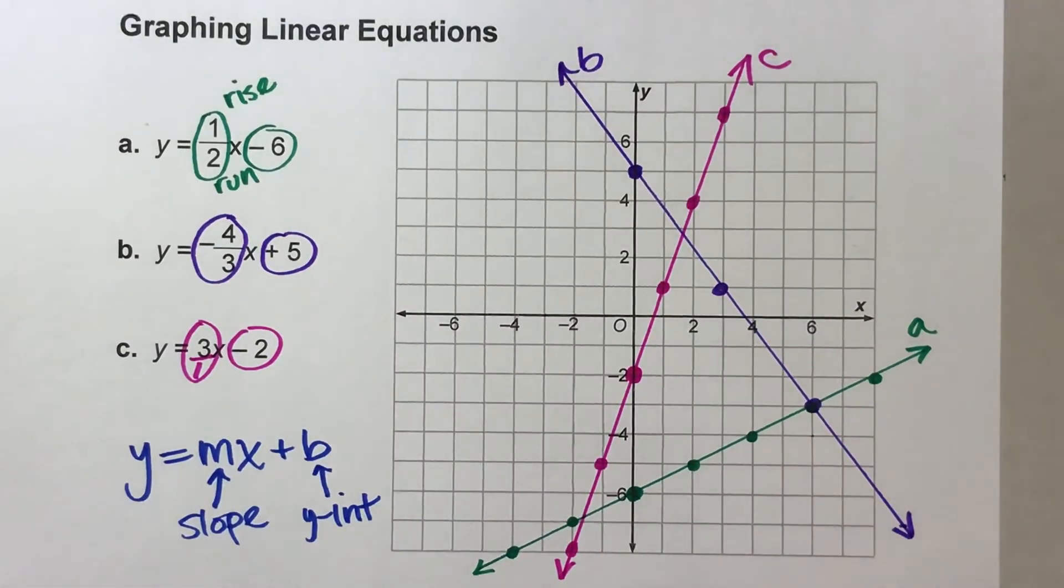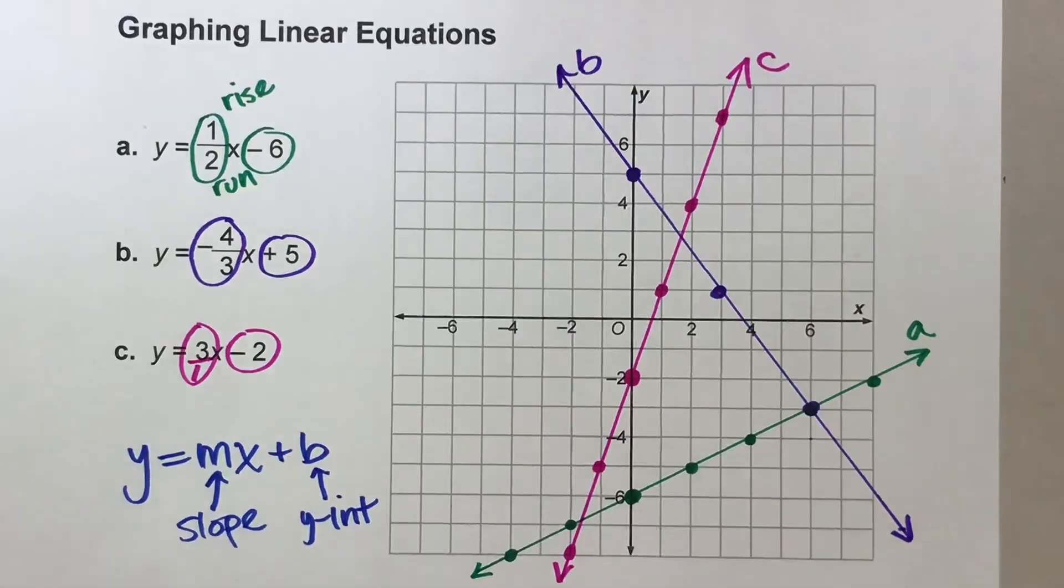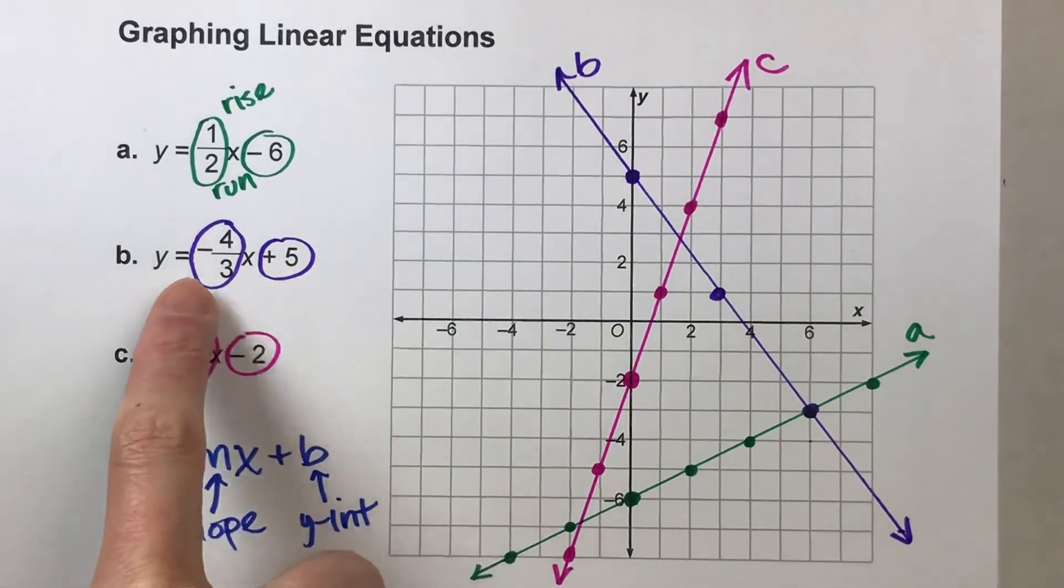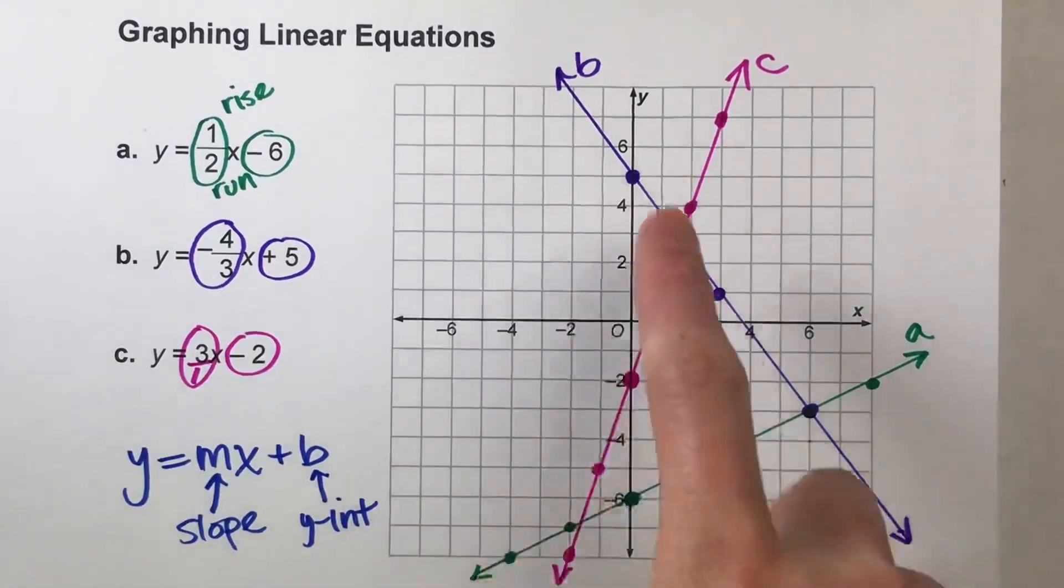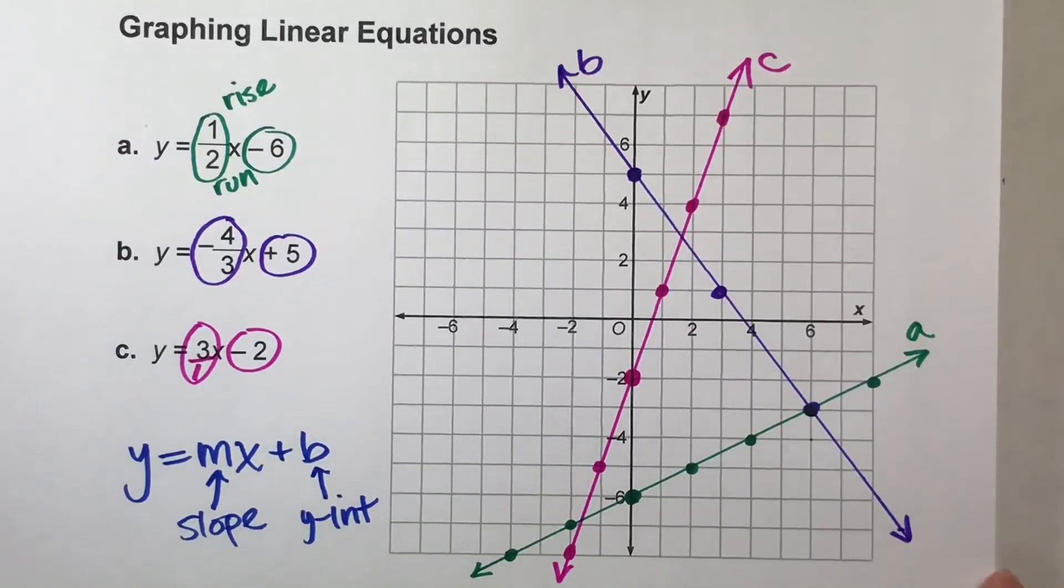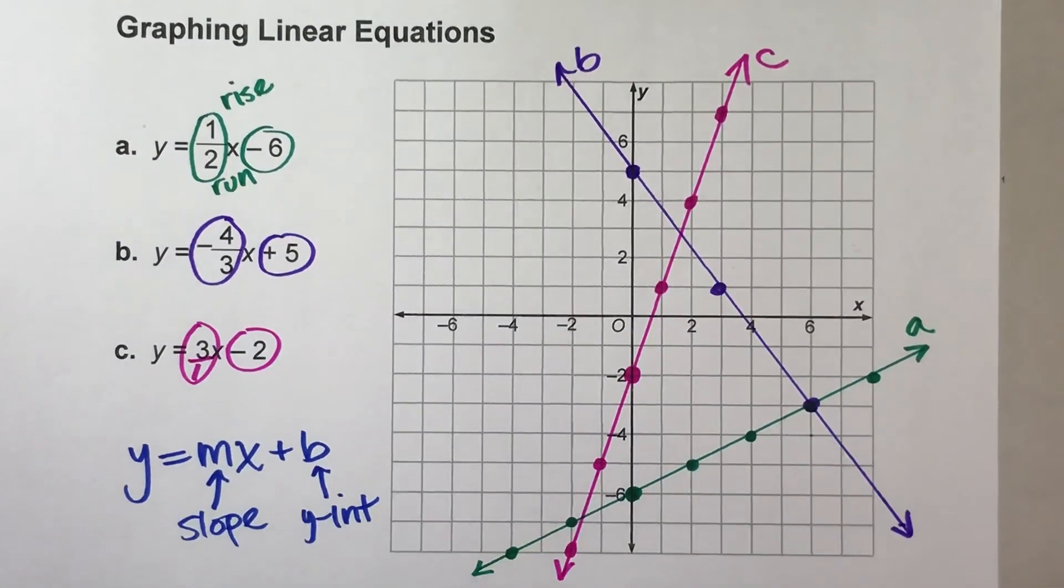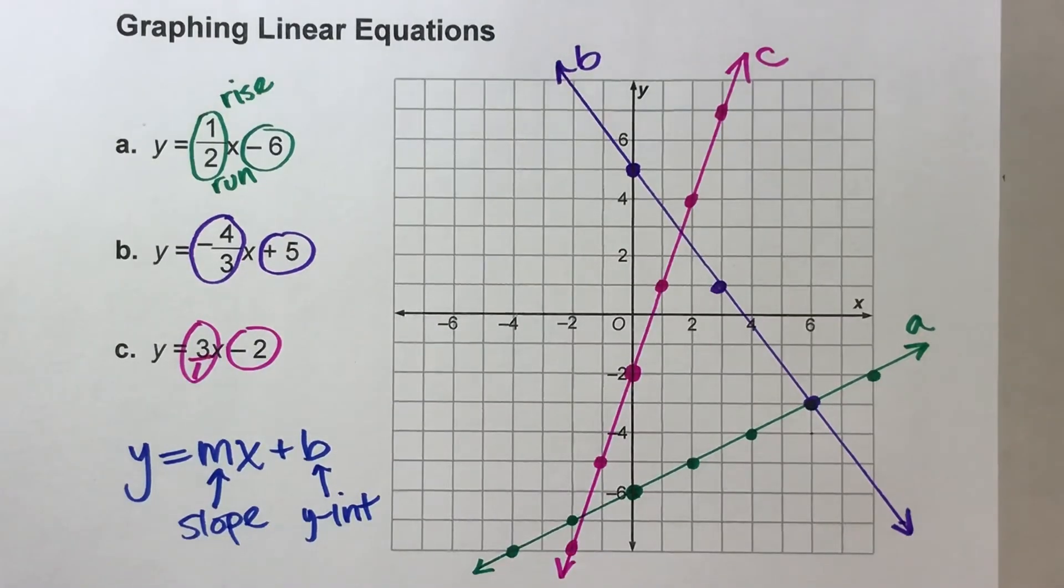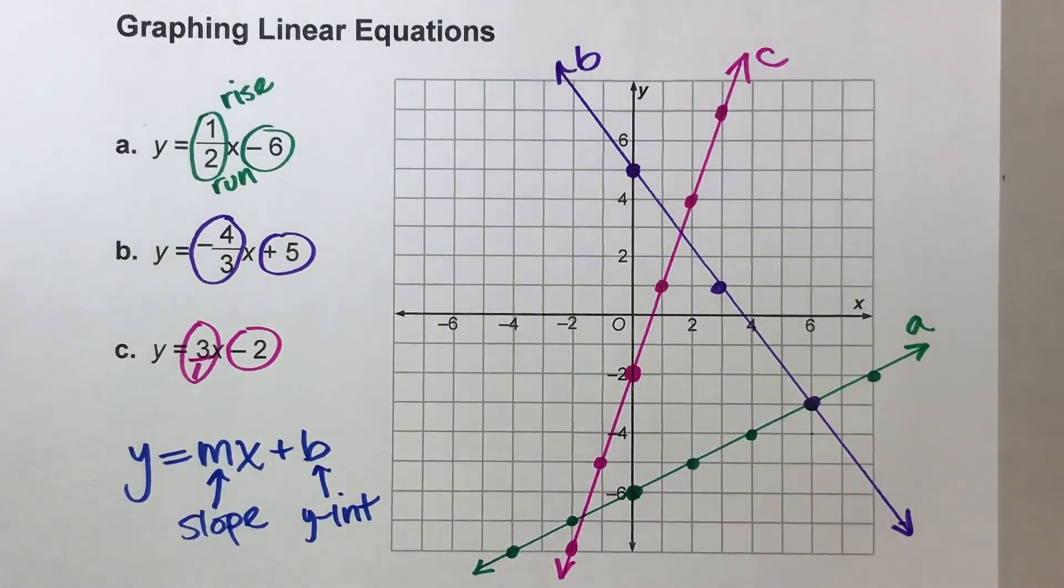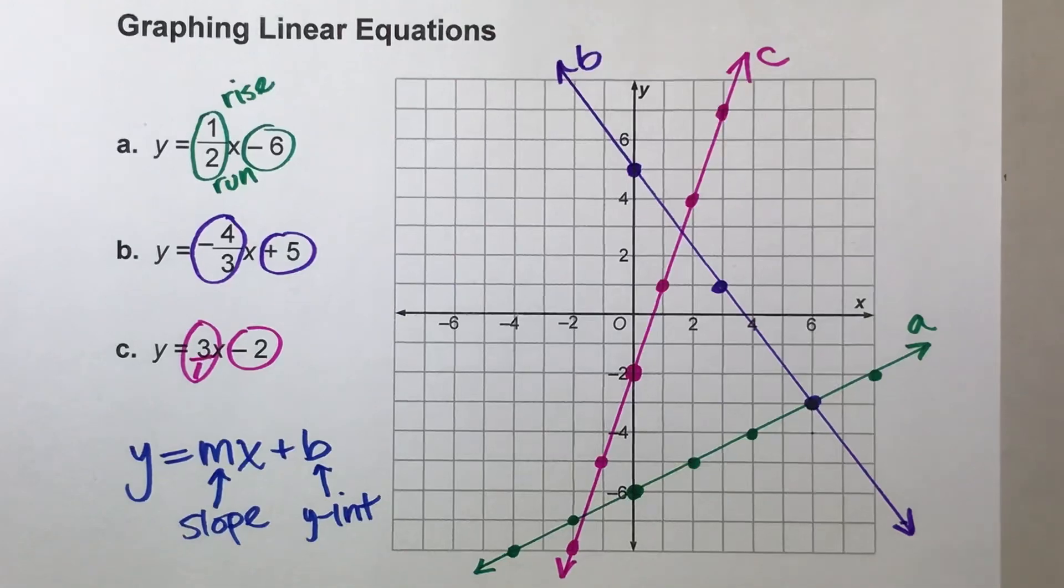All right, so when you're graphing lines, remember, you're looking for two things, the Y-intercept and the slope. And once you've done that, you can draw on your lines and label it in. If you found this video helpful, make sure you hit that like button. Also, it really helps us out when you subscribe. With that being said, good job today, and I will see you next time.